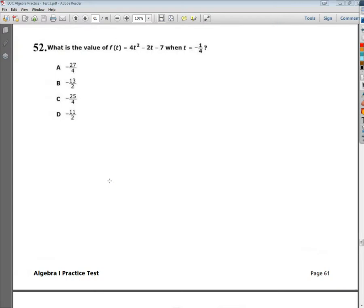Welcome. This is the Algebra 1 practice test number 3, question 52. What's the value of f(t) = 4t² - 2t - 7 when t = -1/4?